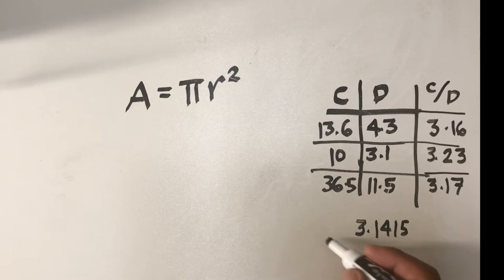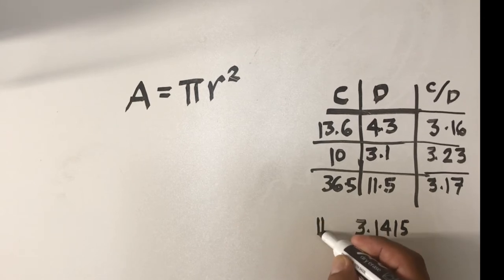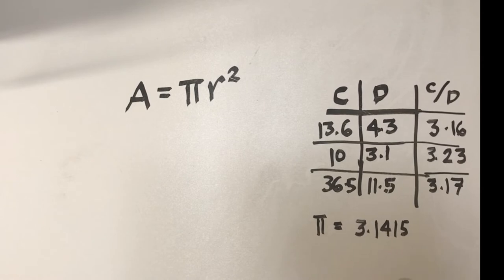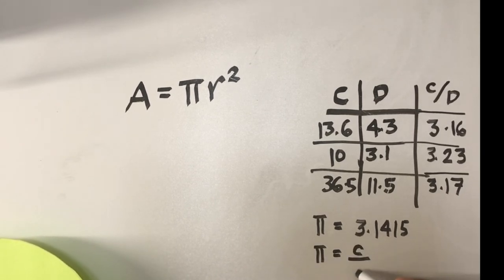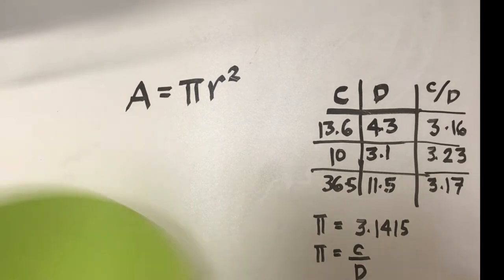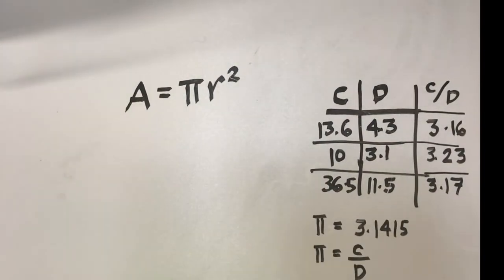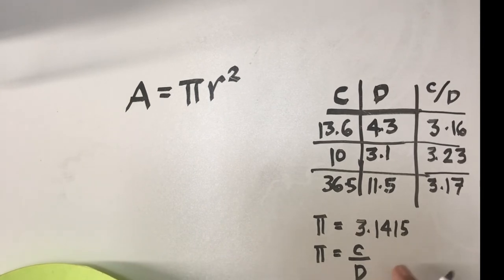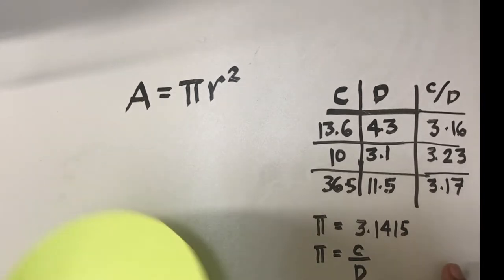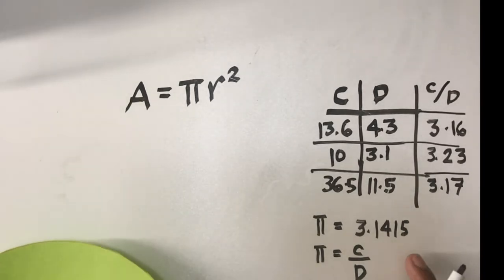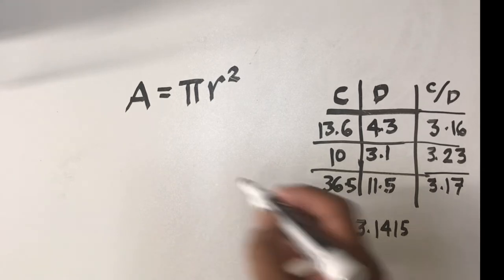And this is now the value that we assign to the symbol π. π therefore is the ratio between the circumference and the diameter of any circle—big circle, small circle, very very small circle. The ratio between the circumference and the diameter would always be this value 3.1415 and so on. This is a non-terminating, non-repeating decimal, but we just get the first four digits.